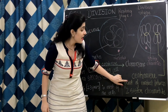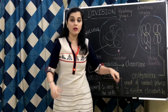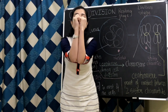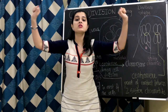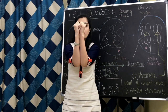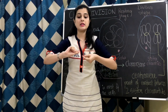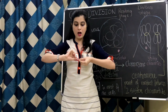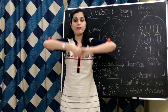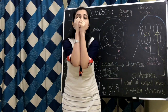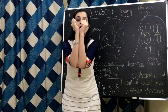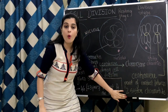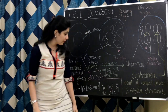One more point students: centromere is the point of contact between two sister chromatids. It is the point of contact between the two sister chromatids.